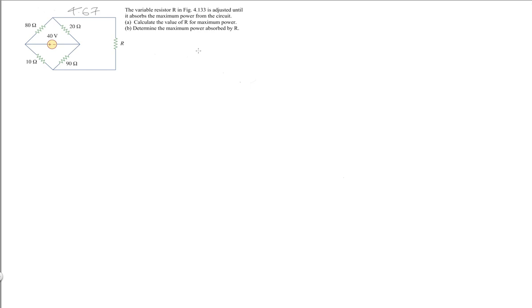In order to answer this question, we are going to try to reduce this to a Thevenin equivalent circuit, as we saw in class. This is my resistance R, this is my R Thevenin, and this is my V Thevenin. Then I will compute I, and we'll find out what I squared R is, which is the power delivered to this resistor.